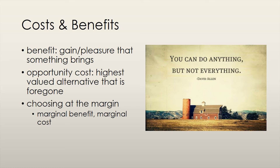I talked about comparing costs and benefits, but it's very important to understand exactly what costs and benefits are. Costs are quite intuitive — they signify something that we need to give up in order to get something. Benefits, on the other hand, represent the gain or the pleasure that something brings from consuming it. The benefit derived from consuming a good varies from person to person; it depends on individual preferences. Economists measure benefit by the maximum value, whether monetary or in terms of other goods, that a person is willing to give up in order to gain something else.